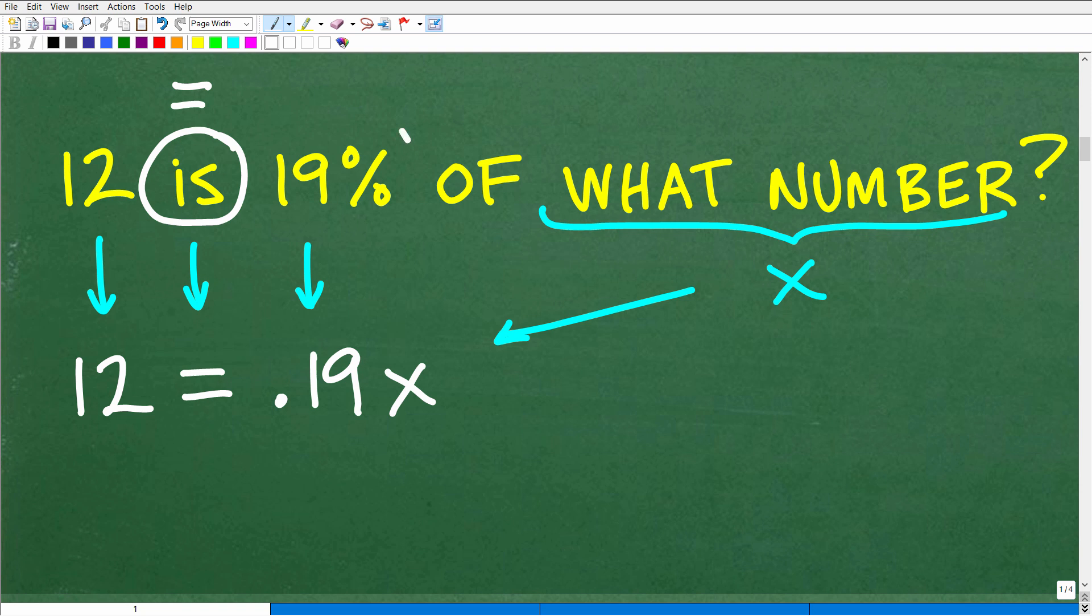So 12 is equal to 19%. Now when we're solving percent problems, we want to express that percent as a decimal. So 12 is equal to 19%, which is the same thing as 0.19. Remember, how do we go from 19% or 19.0% and write that as a decimal? We simply just scoot that decimal point over two places to the left. So 19% is the same thing as a decimal 0.19. So 12 is equal to 0.19, 19% of some number. Of what number? Well, we don't know what that number is. So we'll use the variable x.